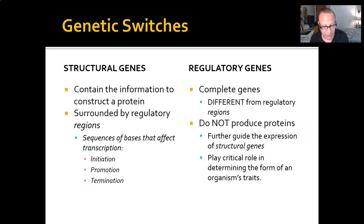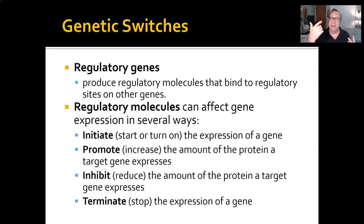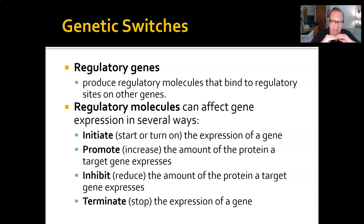Regulatory genes play a critical role not just in normal function, but in differentiating your cells so that your brain does brain stuff and your heart does heart stuff. They are critical in the development of the organism. Regulatory genes produce molecules that bind to regulatory sites on other genes and interact in four ways: initiation — starting gene expression; promotion — increasing transcription activity; inhibition — slowing production; and termination — blocking it entirely.